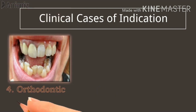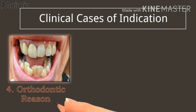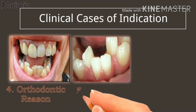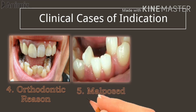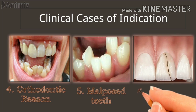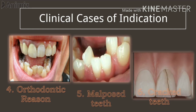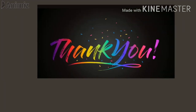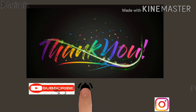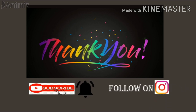Number four is orthodontic reason — such teeth also need to be extracted to provide space for alignment. Number five is malposed teeth which are traumatizing soft tissues and should be extracted. Cracked teeth up to the cementoenamel junction or fractured root is an uncommon but valid indication for extraction. Thank you so much for viewing our video — hope you liked it. Please subscribe to our channel.